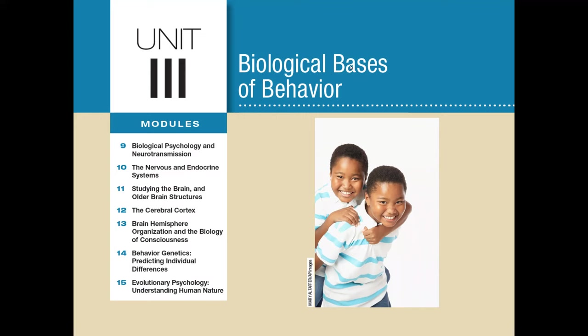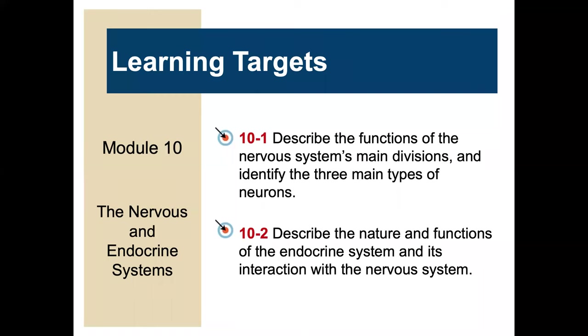Welcome back to Unit 3 from Meijer's Psychology for the AP course, Biological Basis of Behavior. This is Module 10, a rather short module on the Nervous and Endocrine Systems. The learning targets: you should be able to describe the functions of the nervous system's main divisions, identify the three main types of neurons, and describe the nature and functions of the endocrine system and its interaction with the nervous system.